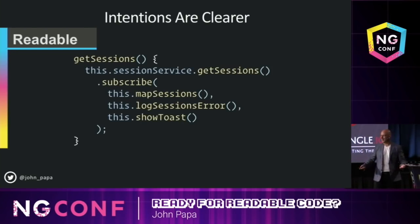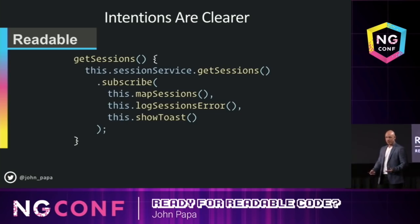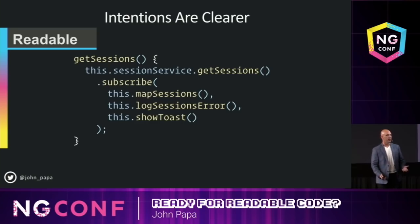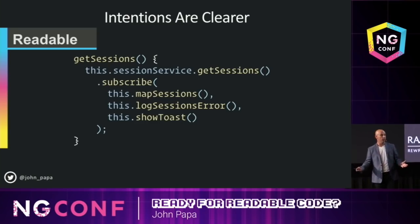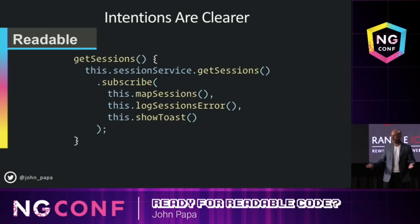Instead, what you could do is rewrite it with functions in the middle — it just makes it a little bit easier. Abstracting into functions is an easy way to do this. And guess what? All modern tools have it. VS Code — you right click, extract this into a function, and you're good to go.